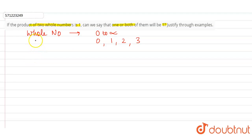In this question, it is asked: can we say that one or both of them will be one? Firstly, one should be there. One times zero—zero is the smallest whole number—so one times zero is zero.